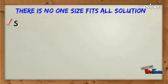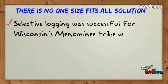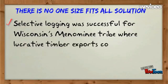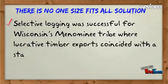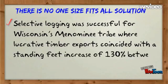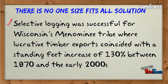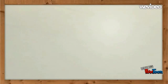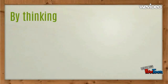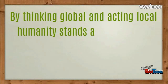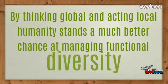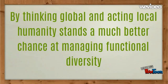There is no one-size-fits-all solution. Selective logging was successful for Wisconsin's Menominee tribe, where lucrative timber exports coincided with a standing feet increase of 130% between 1870 and the early 2000s. Afforestation is preferable in cases such as Haiti. By thinking global and acting local, humanity stands a much better chance at managing functional diversity.